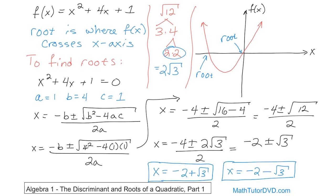Now it looks a little weird because you have negative 2 plus a radical and negative 2 minus a radical, but don't forget that this radical — square root of 3 — is just a number. This is the exact value; if you punch it in your calculator you'll get a decimal approximation. Negative 2 minus a number is more negative — that would be this root over here. Negative 2 plus this radical is a little bit more shifted in the positive direction — and so that's this root here. So each solution corresponds to one of the crossing points.